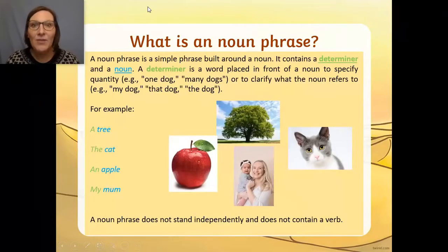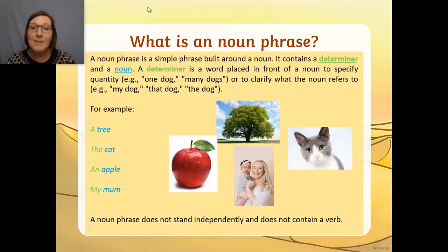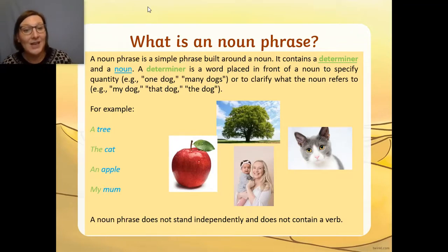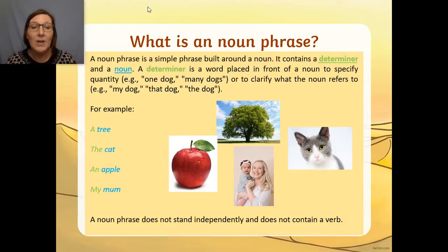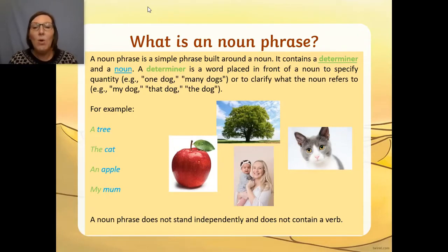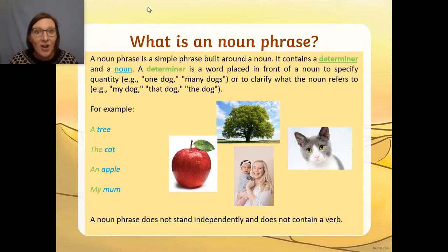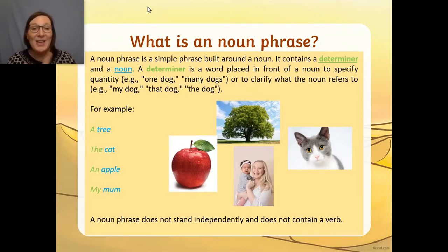So, a noun phrase. What is a noun phrase? Well, a noun phrase is a simple phrase built around a noun. It contains a determiner and a noun. A determiner is the word placed in front of a noun to specify quantity — so for example, 'one dog,' 'many dogs' — or to clarify what the noun refers to: 'my dog,' 'that dog,' 'the dog.' Okay, so here I've got some examples: a tree, the cat, an apple.